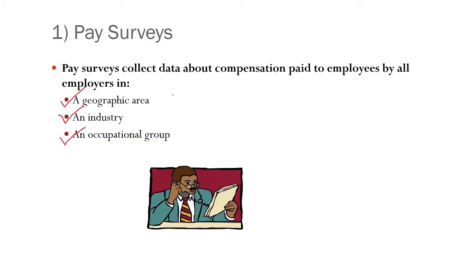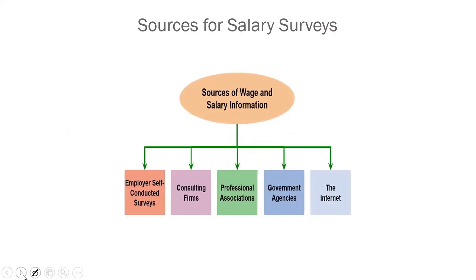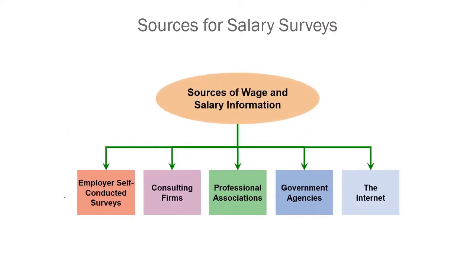The last method is communication, grievance mechanisms, and employee participation. If there is any issue regarding equity — an employee feeling they are not being paid well — it can be resolved by having a grievance mechanism within the organization. Pay surveys collect data about compensation paid by all employers in a particular geographical area, industry, or occupational group. Sources for salary surveys include employer self-conducted surveys, consulting firms, professional associations, government agencies, and the internet.